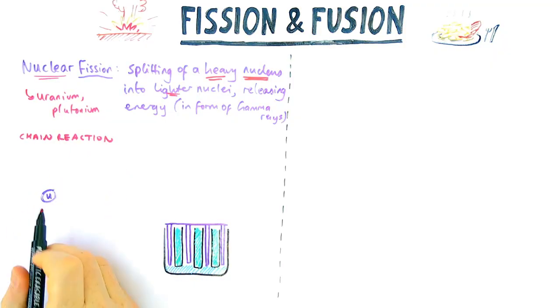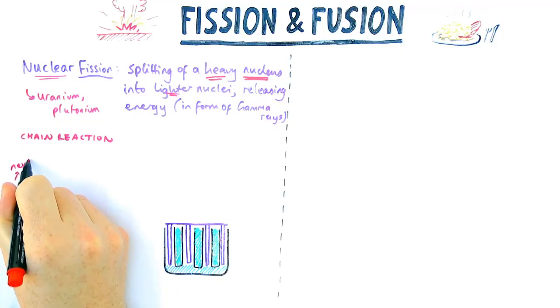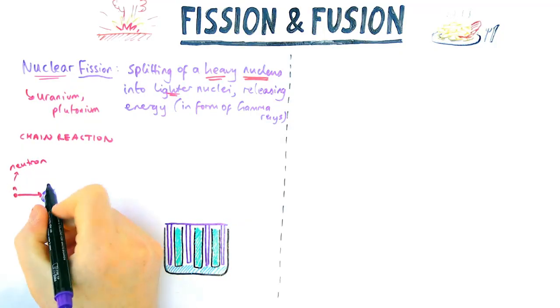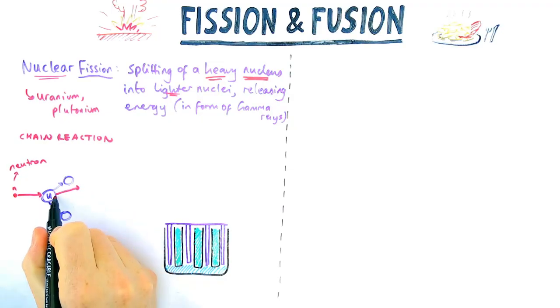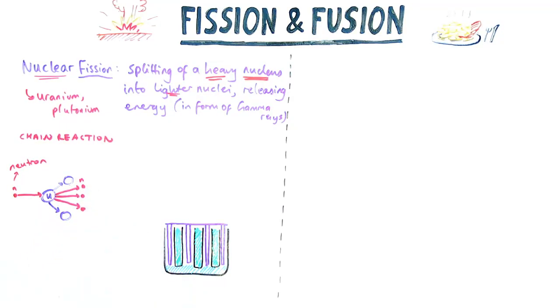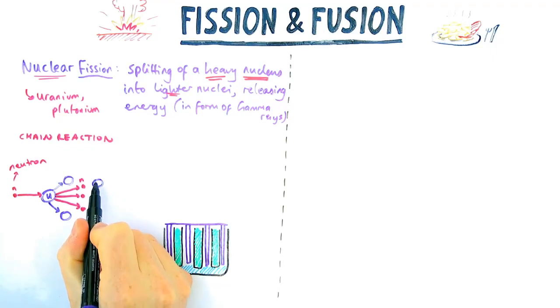Now, how do you make it work in a nuclear reactor? We need to have something called a chain reaction happening. To kick off this chain reaction, we need a neutron. So the neutron will get fired into a uranium, for example, nucleus, and uranium will split. That is nuclear fission. When that happens, there are some additional neutrons that are also released. Normally three, sometimes two, sometimes four.